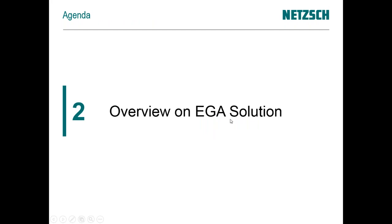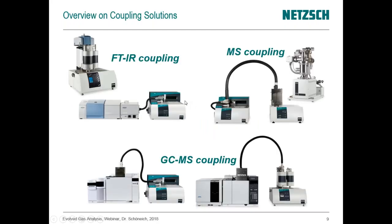Let's have an overview of evolved gas analyzer solutions. In the common market, you will face three coupling solutions — also called hyphenated techniques. They are infrared spectroscopy (FTIR coupling), mass spectrometer coupling (MS systems), and for complex samples, GCMS coupling, which combines a separator and a gas analyzer. In principle, all three techniques have advantages and disadvantages, and different application fields — for instance, in inorganics some coupling techniques are better than others, and vice versa in the organic field.